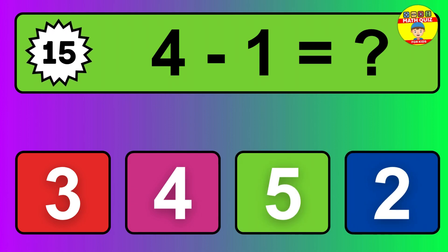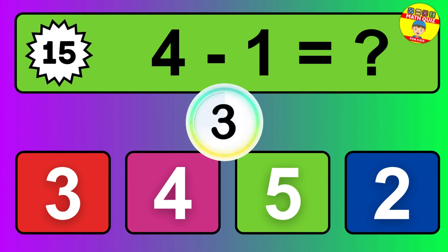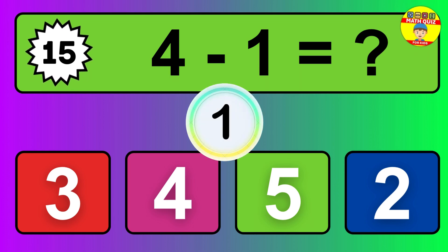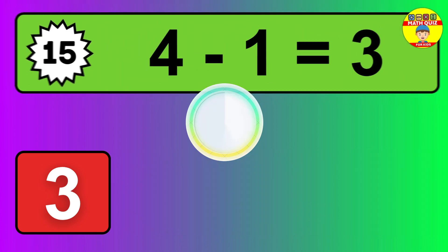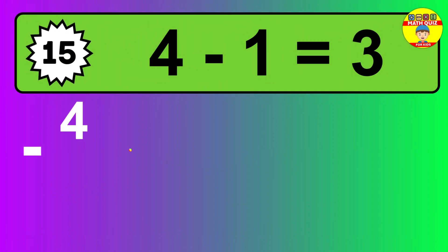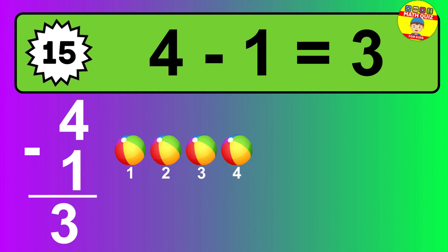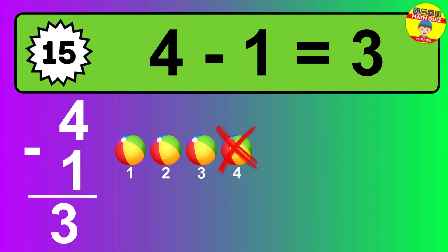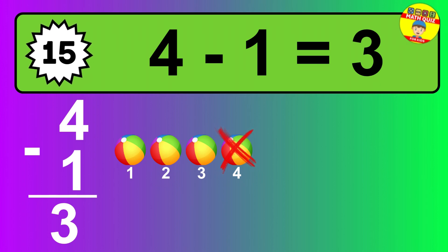Question 15. 4 minus 1 equals what? The answer is 4 minus 1 is 3. Let's count it: 1, 2, 3.